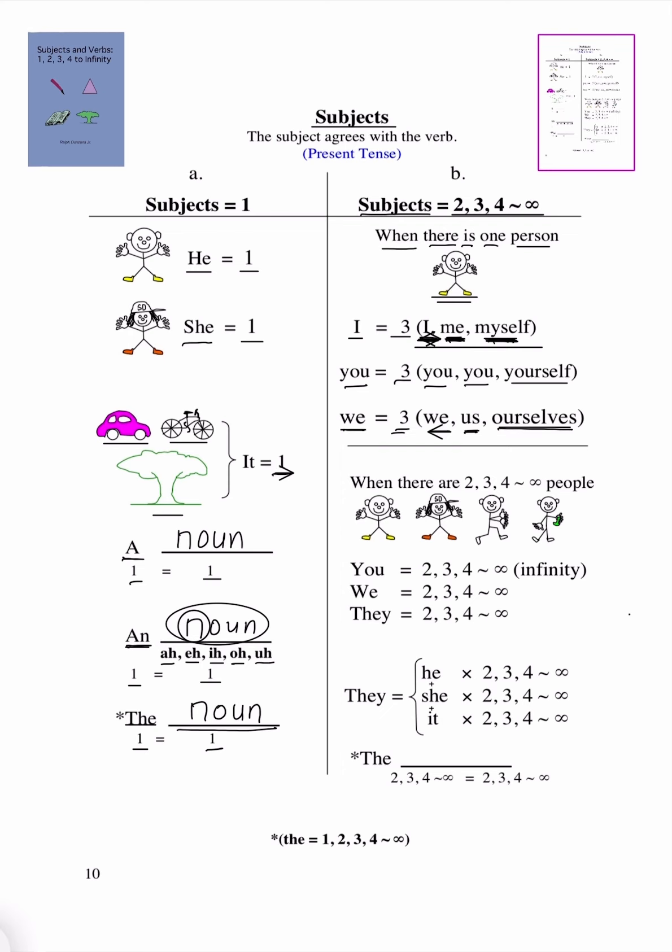Now, I will explain this later, why I equals 3 and why I'm using it. Then here, when you have when there are 2, 3, 4 to infinity, which just means many.